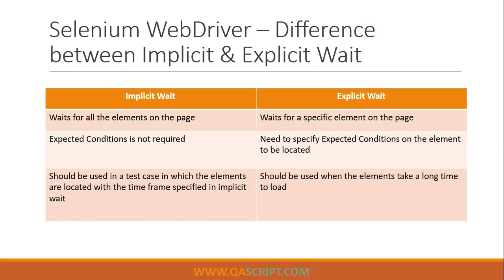Let's look at the difference between implicit and explicit wait, because people often get confused about when to use which. Implicit wait waits for all elements on the page to get loaded, while explicit is for a specific element. In implicit wait, expected conditions are not required, but in explicit you need to specify an expected condition for the element. Implicit wait should be used in scenarios where your elements can be located within the specified time frame.